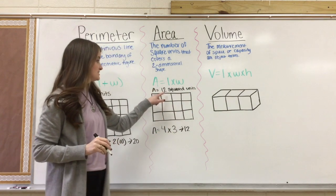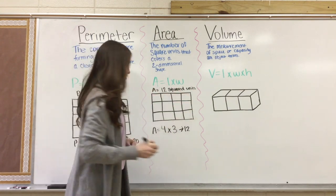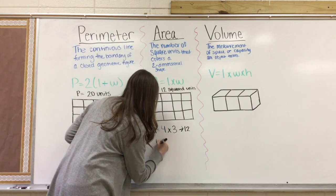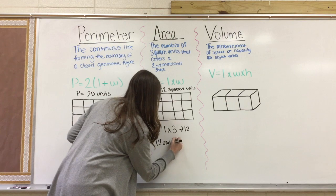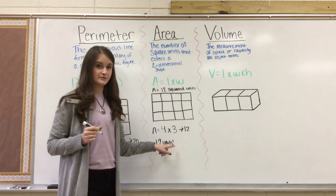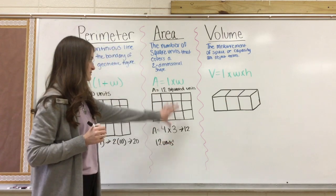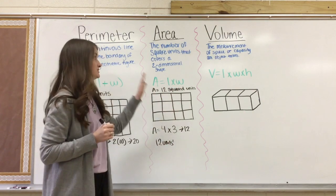So the area of this shape is 12 squared units. You could write it out like I did, 12 squared units, or you could write it like this, 12 units squared. You can put the 2. Either way, they both mean squared units, which is what you need for area.